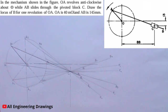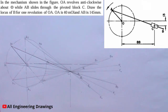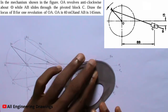Now it is time to produce the loci of point B. I will draw a curve passing through all the B points — that is, from B0 to B7. The loci should also pass through the P points I just marked. I will do that using my French curve.